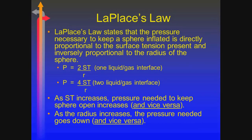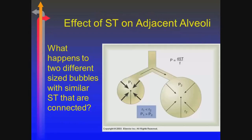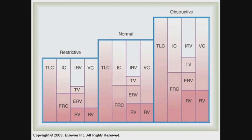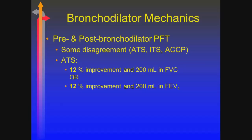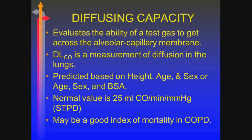Laplace's Law talks about surface tension and why, as an alveolus becomes smaller, surface tension is greater — molecules want to bind together. Surfactant acts as the agent to counteract that and prevent the alveolus from collapsing. Pre- and post-bronchodilator therapy: we go with what the American Thoracic Society says — a 12% improvement and 200 milliliters in either the FEV1 or the FVC, calculated as new minus old divided by old.